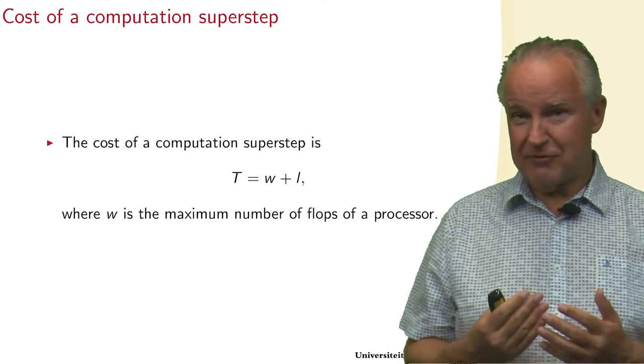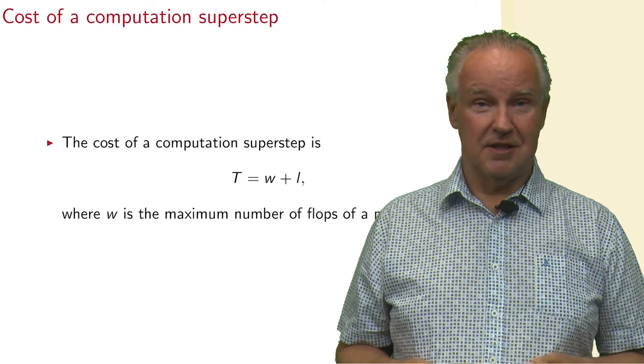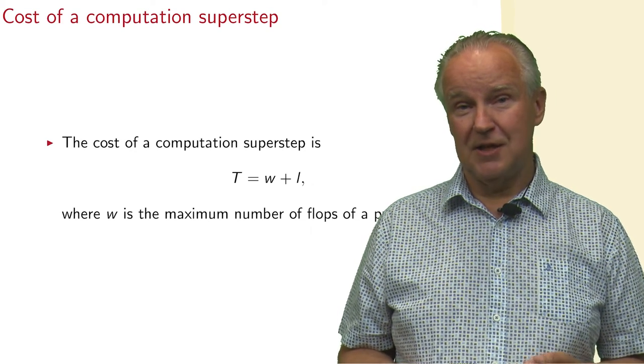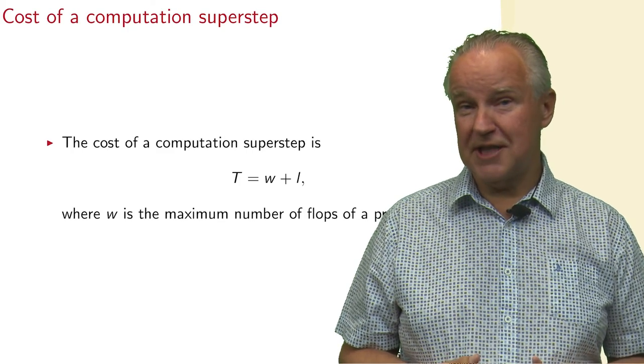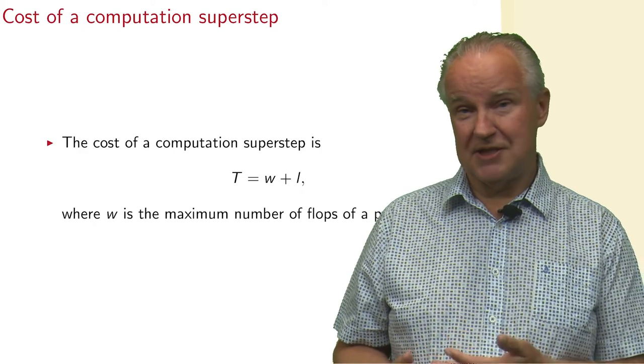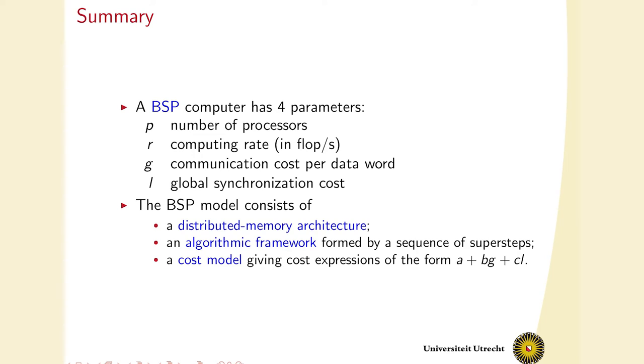When we have an algorithm, we can add up all the costs, and then we get a formula of the form A plus BG plus CL, where the A represents the computation time, the BG the communication time, and the CL the synchronization time.